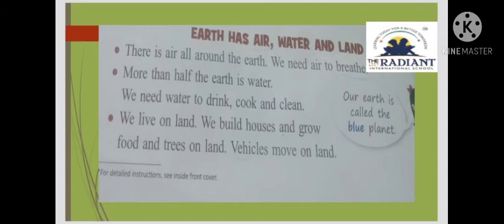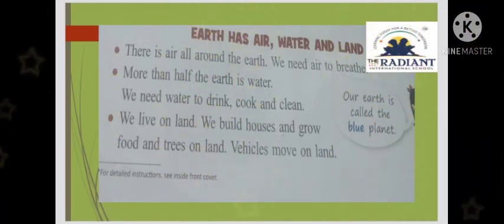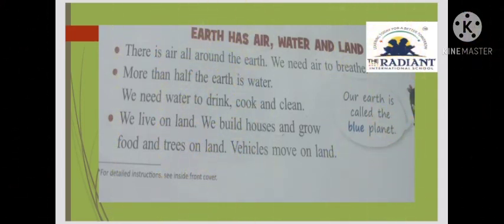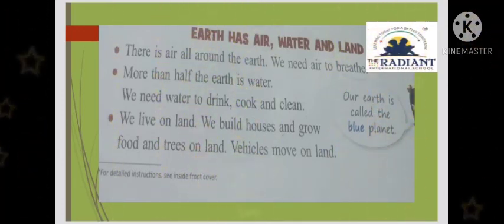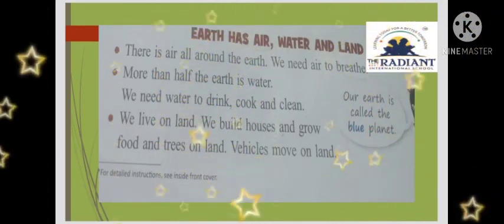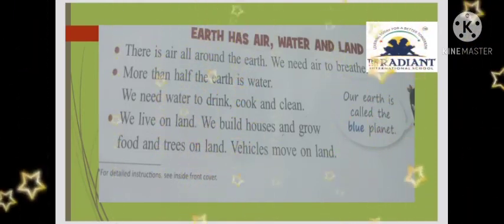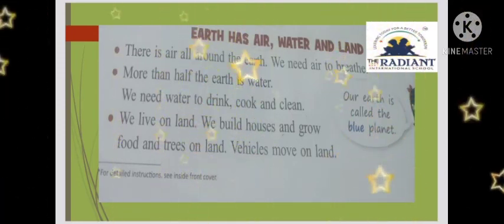Dekho yahan side mein likha hua bhi hai, Earth is called the blue planet. Earth ko blue planet bhi kaha jata hai. Earth has air, water and land. There is air all around the earth. We need air to breathe. More than half the earth is water. We need water to drink, cook and clean. We live on land. We build houses and grow food and trees on land. Vehicles move on land.